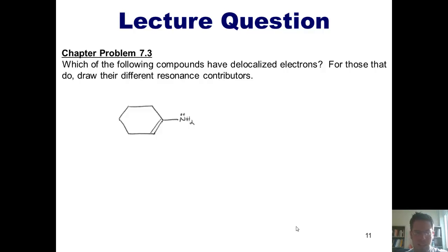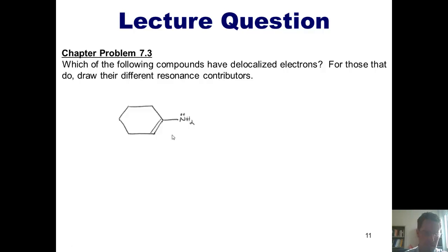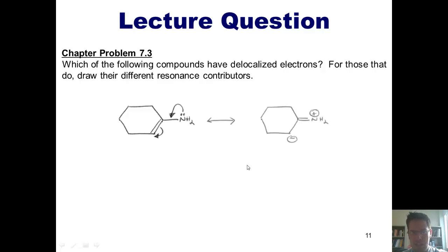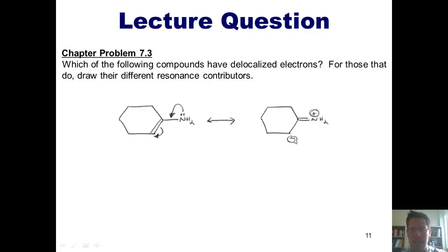Can these lone pairs somehow push in and form a resonance contributor involving these pi electrons? In the previous example, the oxygen lone pairs were too far removed from the double bond. In this case, however, the nitrogen lone pairs are coming immediately off one of the two carbons participating in the double bond. Thus, if these lone pairs came in to form a nitrogen-carbon double bond, pushing these two pi electrons up and onto this carbon, I would get this structure. The nitrogen now has a positive charge because it has four bonds, sharing more electrons than nitrogen likes to in a neutral state, and the carbon that just gained these two electrons gets a negative charge.